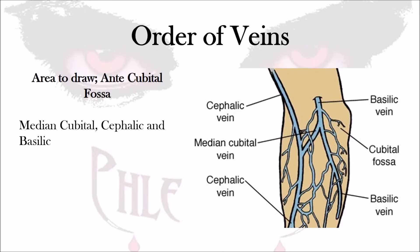I highly recommend following this order: first look for the median cubital, then the cephalic, and then the basilic. If those three veins are not accessible, we go to the back of the hand veins, referred to as the dorsal metacarpal veins. With the dorsal metacarpal veins, we can also look at the wrist area, or where the watch goes. This is the standard order we should follow when inspecting an arm.